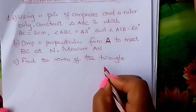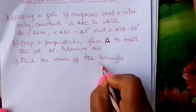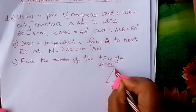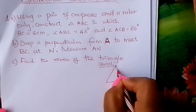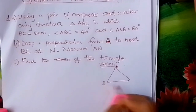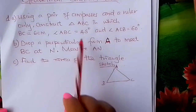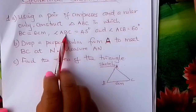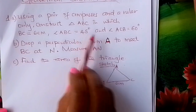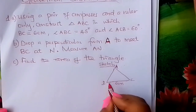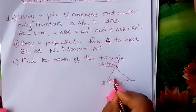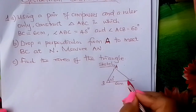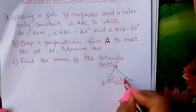The first thing to do is put down a small sketch. Draw a triangle and label the vertices A, B, and C. We are told that BC is 6 centimeters. Angle ABC is 45 degrees, and angle ACB is 60 degrees.